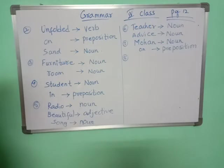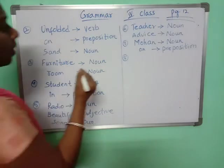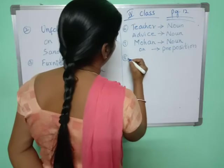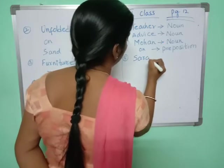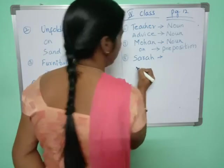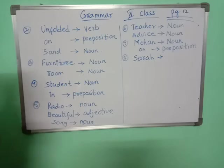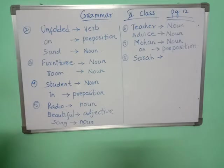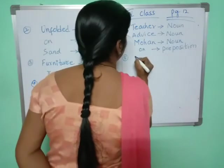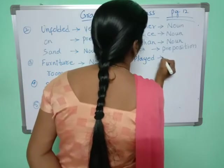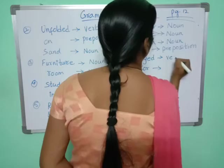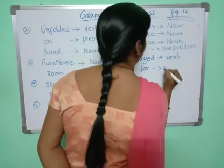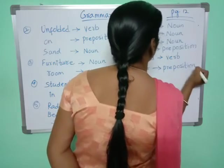Eighth one: Sarah played the music for the class. The underlined words are 'played' and 'for.' Played is a verb — it is an action word. And 'for' is a preposition.